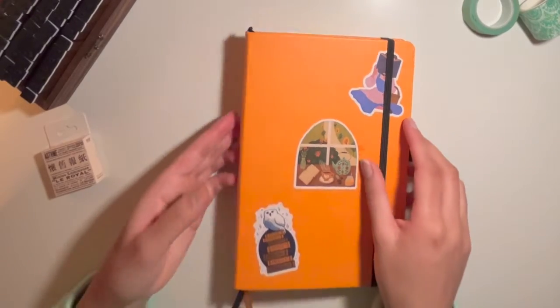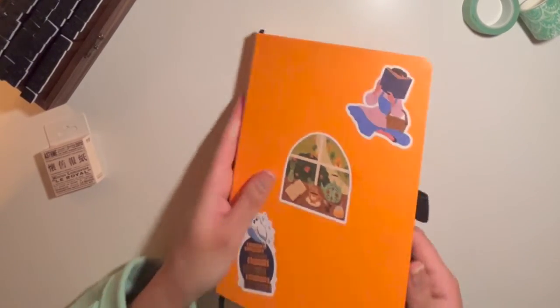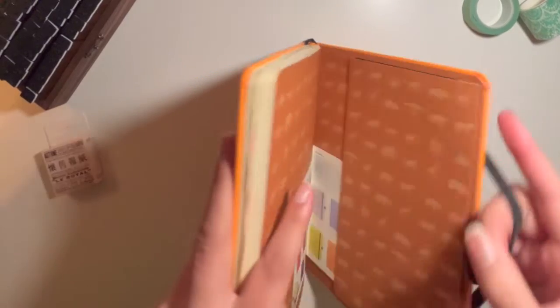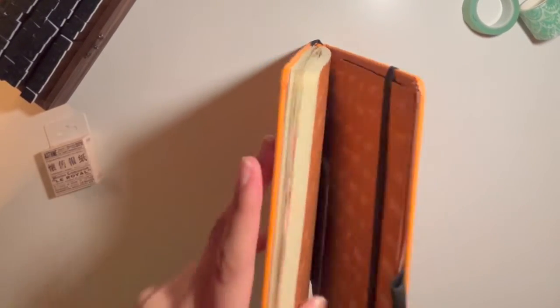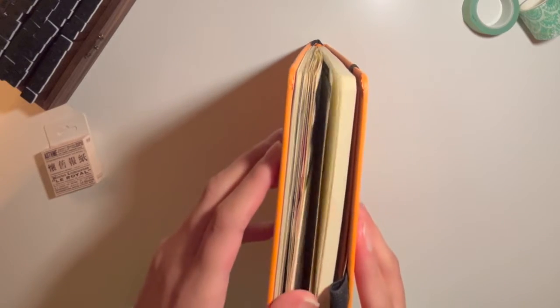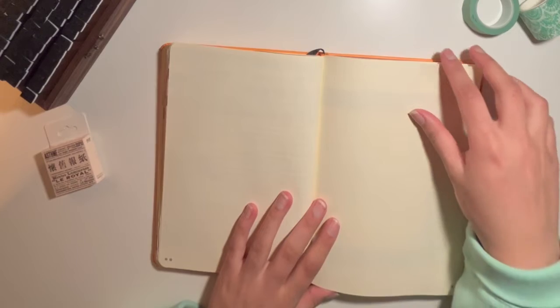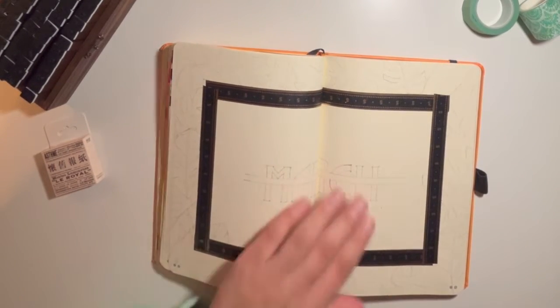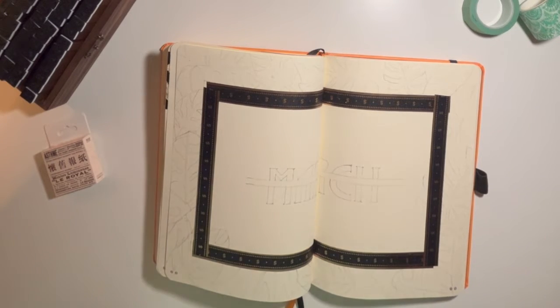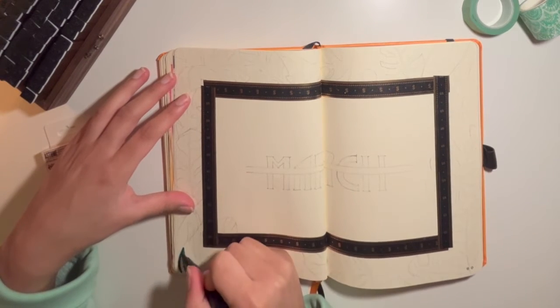So for some reason, March always reminds me of nature and growing, you know, trees and plants and leaves and everything. And for some reason I always end up doing a sort of greenery nature planty themed March spread. And nothing different this month. I have gone with this pretty simple kind of leaf design.